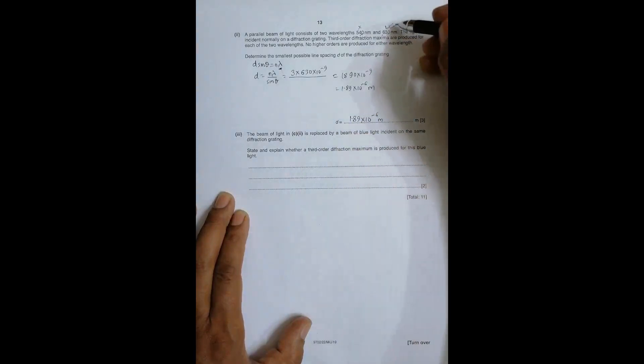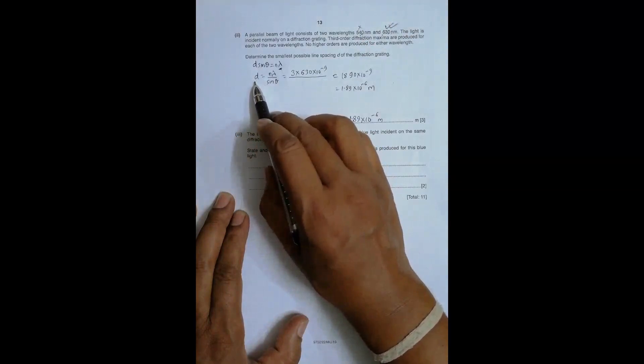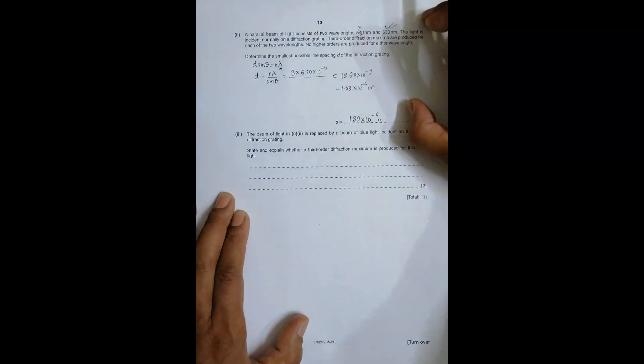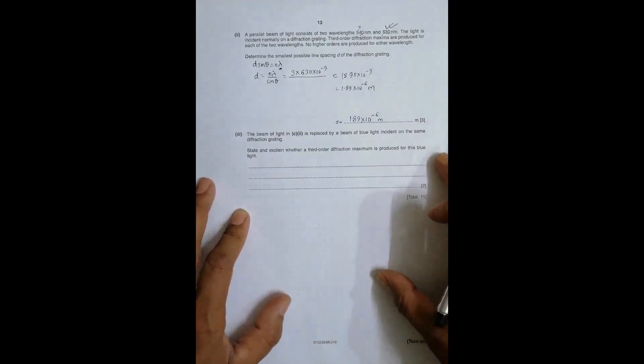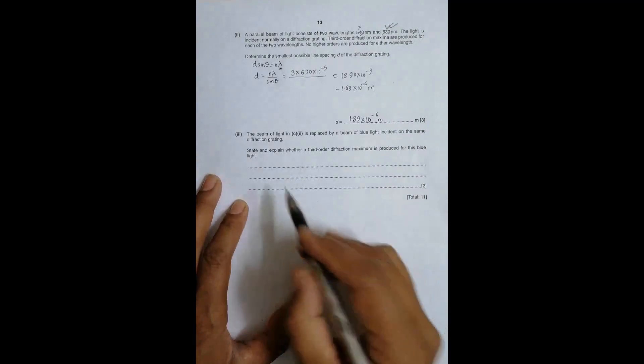So the value of D equals 1.89 times 10^-6 meters. We are using this wavelength because this will give 90 degrees earlier than the other. After that we calculate this D spacing at the highest angle. So this is where people have been stuck, maybe it's because of not understanding the language or something like that. That's why I am addressing this question.